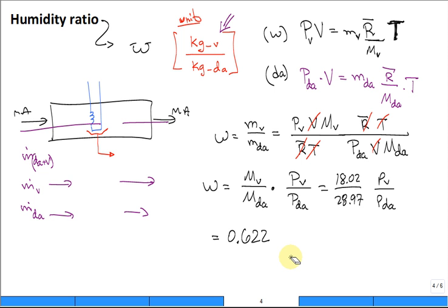That's all it is. And now you have PV over PDA. So that's how you calculate this omega, this humidity ratio.